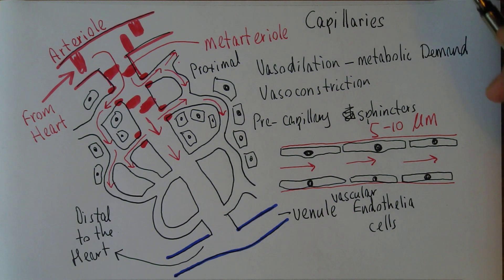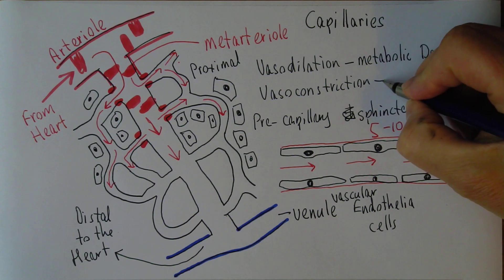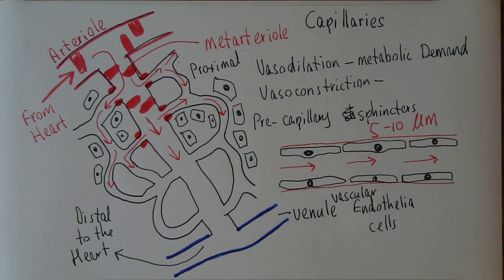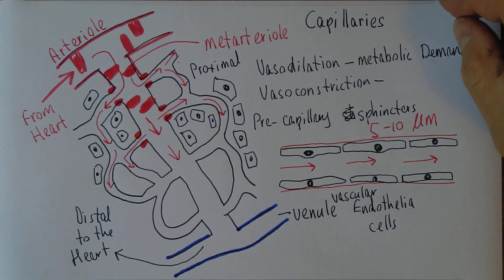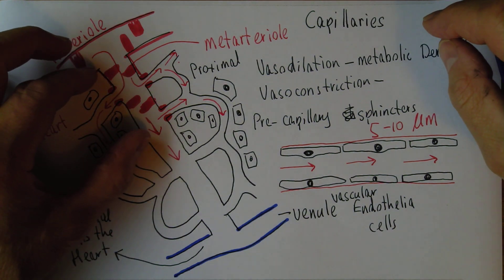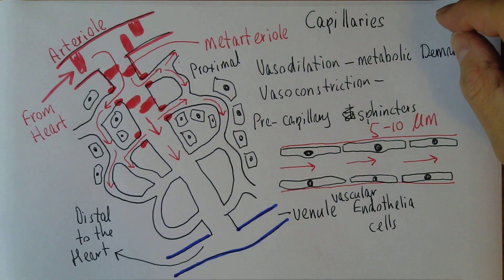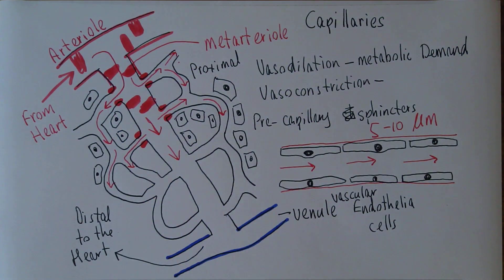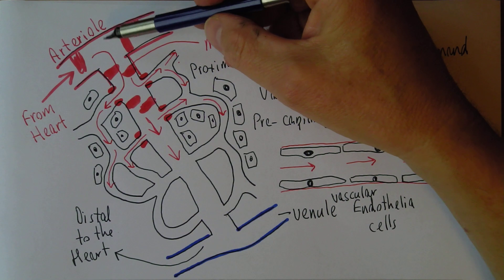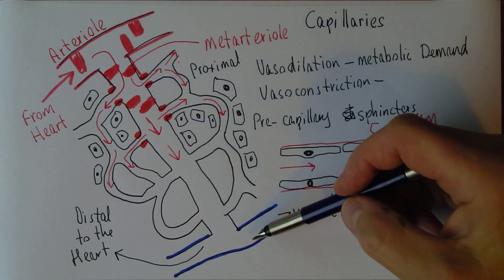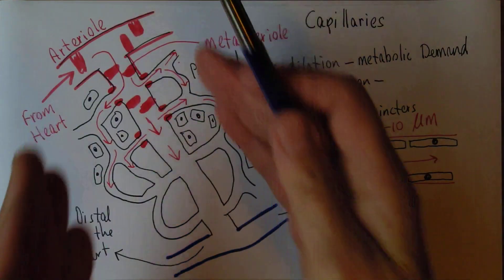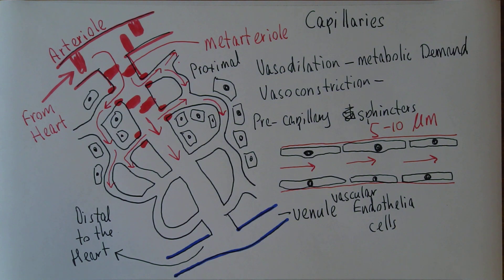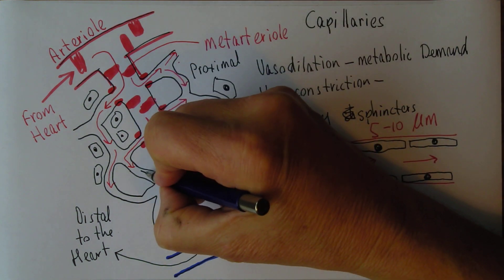If there's a reduced metabolic demand and not as much going on, we don't need as much blood going to that particular tissue, and there'll be a relative vasoconstriction — a constriction of the pre-capillary sphincters — greatly reducing the flow of blood through that tissue. That means the blood will go from the arteriole pretty well straight down to the venule without necessarily perfusing the capillaries.